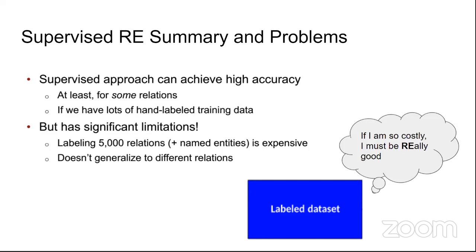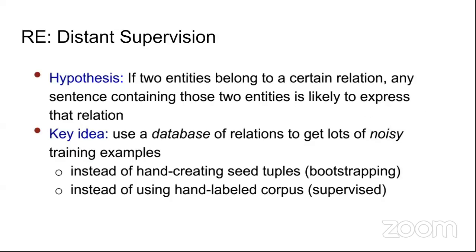Even with a large labeled dataset, a supervised relationship extraction approach may not generalize well across different relations. If the training data has not seen an example of a particular relation, it probably won't correctly predict that relation on unseen data.